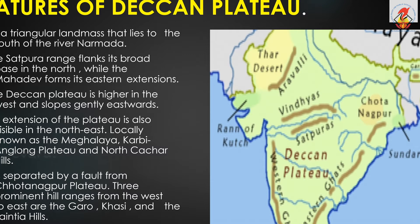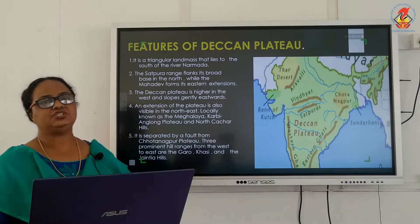The northeastern extension of the Deccan plateau is locally known as the Meghalaya plateau, Karbi Anglong plateau, and North Kachar Hills. It is separated by a fault from the Chota Nagpur plateau. Three prominent hill ranges from west to east are the Garo, Khasi, and Jaintia Hills.